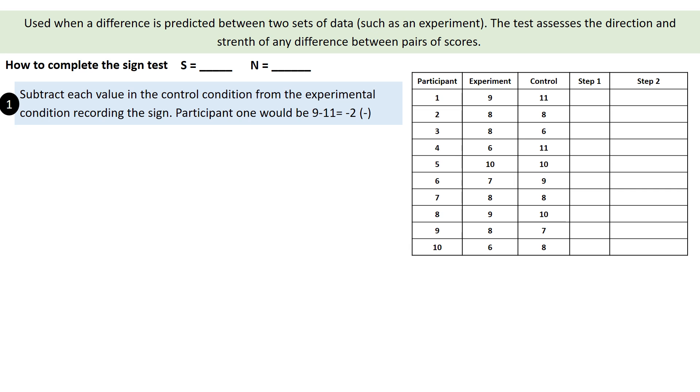Let's have a little look at this. We need to get S and we need to get N. What we're going to do first is in each value we're going to subtract the control condition from the experimental condition. Actually, it doesn't matter if you minus the experimental condition from the control condition or the control condition from the experimental. It'll still turn out correctly.